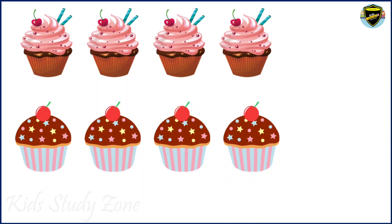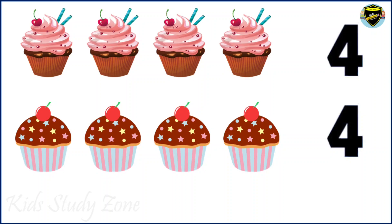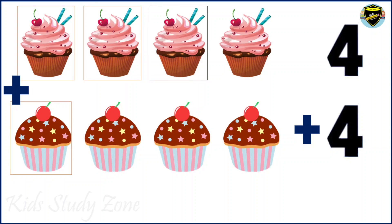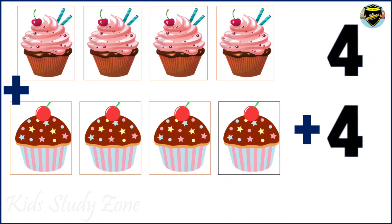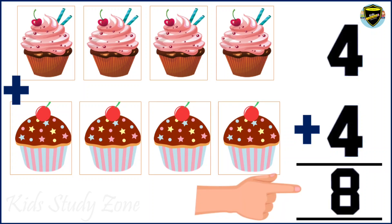Now we have some cupcakes. Isn't it delicious? Now we need to find out total how many cupcakes are there. You can see some chocolate cupcakes and you can see some strawberry cupcakes. Let's start counting: 1, 2, 3, 4. So we have 4 strawberry cupcakes. And now we count the chocolate cupcakes: 1, 2, 3, 4. We have 4 chocolate cupcakes. We put the sign of addition, that is plus sign. Now we need to add these: 1, 2, 3, 4, 5, 6, 7, 8. Therefore, we have total 8 cupcakes.